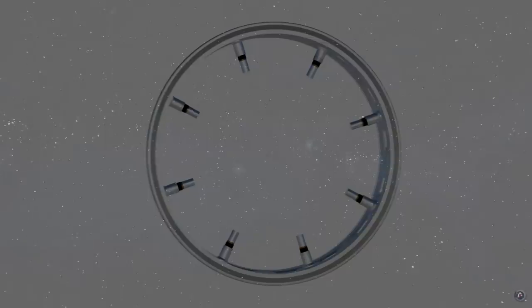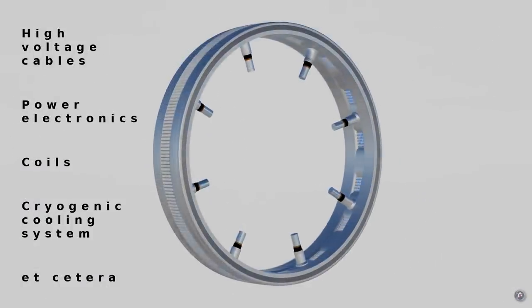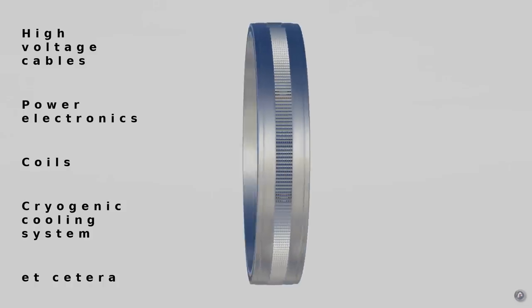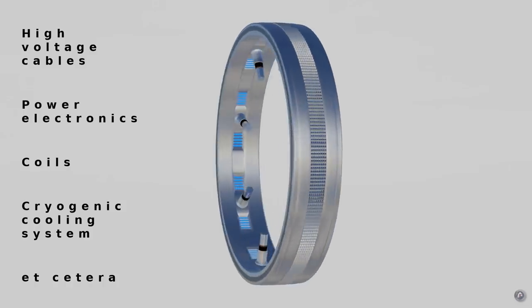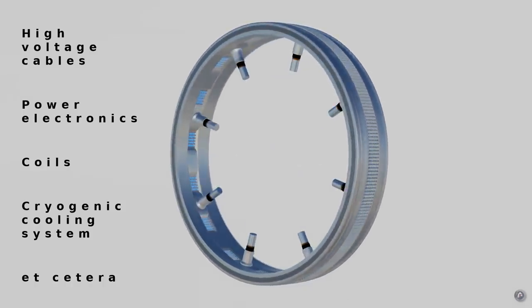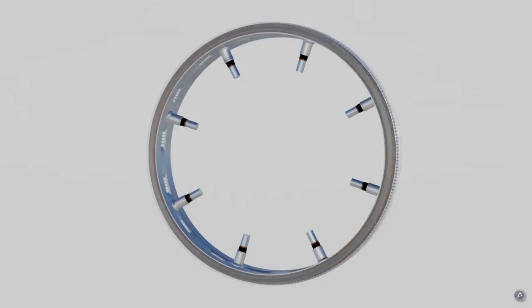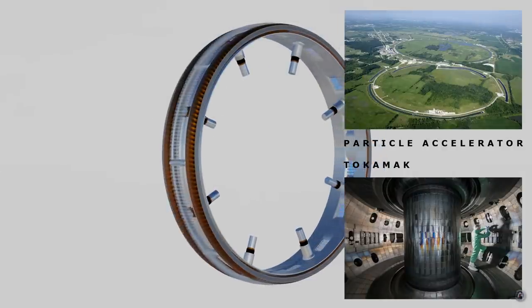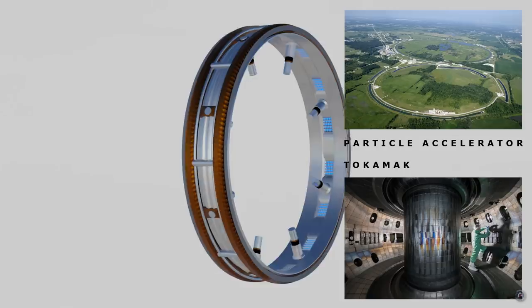Let's provide you with a detailed explanation of the warp drive and how it actually distorts or curves spacetime. The warp drive consists of a collection of the usual high-voltage cables, power electronics, coils, cryogenic cooling systems, etc., common to any high-voltage, high-frequency systems such as particle accelerators and tokamaks.